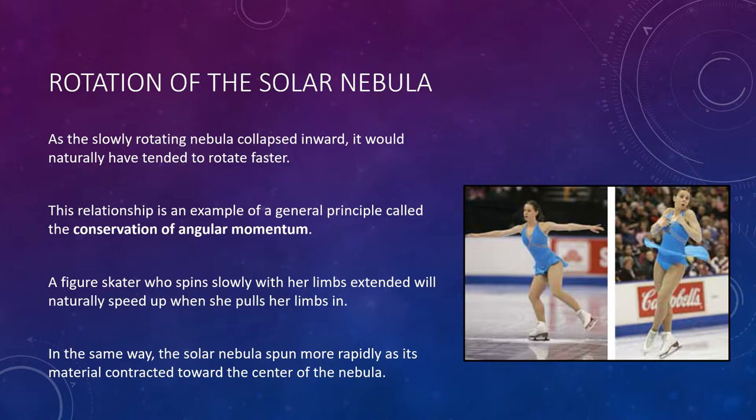A figure skater is a perfect analogy for conservation of angular momentum. Figure skaters make use of this principle: when a spinning skater pulls her arms and legs in close to her body, the rate at which she spins automatically begins to increase. In the same way, the solar nebula spun more rapidly as material contracted toward the center.